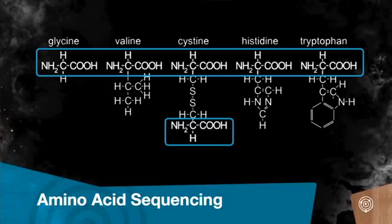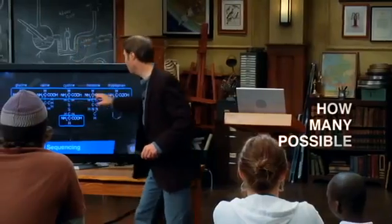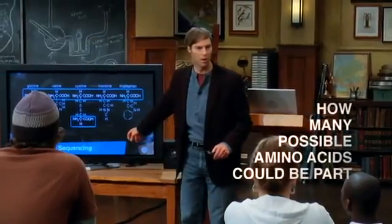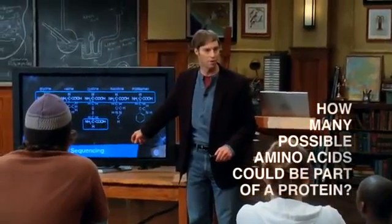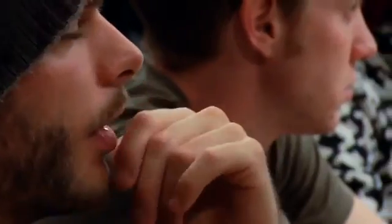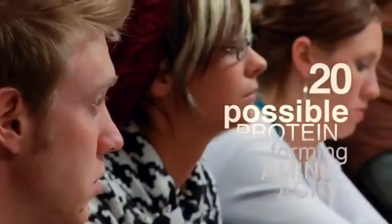How the amino acids are the building blocks of the proteins. At each one of these sites, how many possible amino acids could be part of a growing protein? Do you know this from the biology? There are 20 possible protein-forming amino acids.